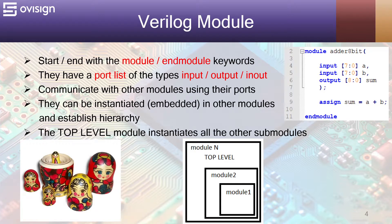Here is a simple module example. We have an 8-bit adder. It has two inputs and one output. The output sum is assigned with the value of a plus b. You should always start and end the module with the module and end module keywords. You have a port list of the types input, output, and in-out. Please remember to group ports of the same type when you write them.